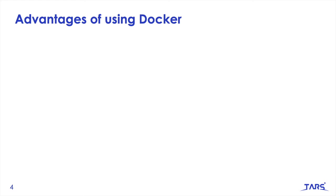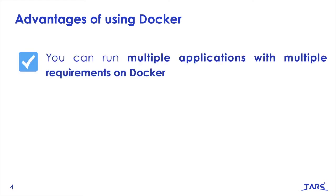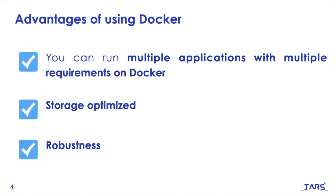So based on this, what are the advantages of using Docker? The first one is that you can run multiple applications with multiple requirements on Docker, as long as they have the same operating system. Also, the storage is optimized because a large number of applications can be hosted on the same host, and containers are usually few megabytes in size and consume very little disk space. And the last one is robustness. A container does not have an operating system installed on it, so it consumes very little memory in comparison to a virtual machine. This will also reduce the boot-up time to just a few seconds if compared to a virtual machine.